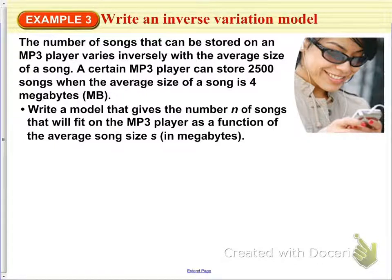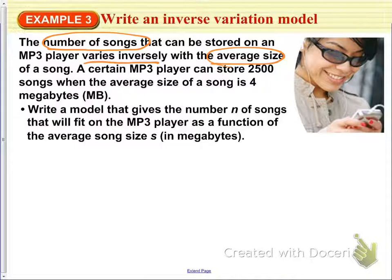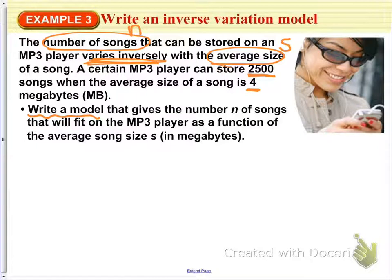Here's a word problem with an inverse variation model involving an MP3 player. The number of songs that can be stored on an MP3 player varies inversely with the average size of a song. A certain MP3 player can store 2,500 songs when the average size of a song is 4 megabytes. We start by writing the inverse variation model — we know it's inverse because it says 'varies inversely.' We'll call number of songs n and average size of a song s, so n varies inversely with s. The constant of variation a is what we'll solve for.